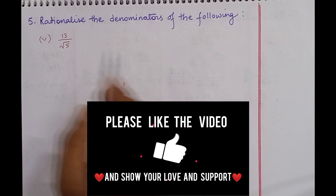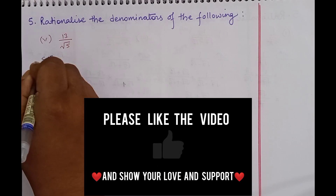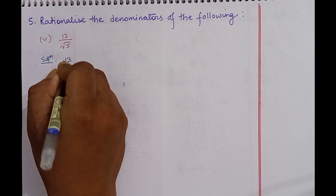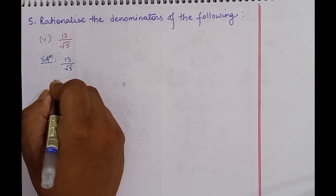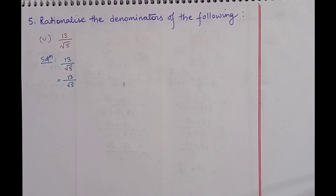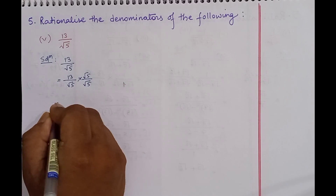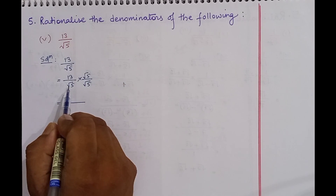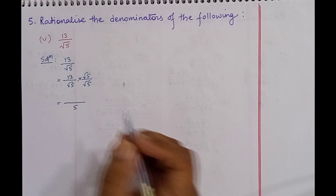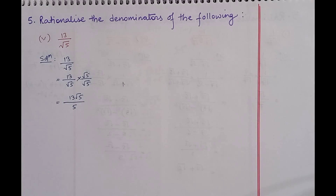Rationalize the denominators of the following: we have 13 by root over 5. So we'll multiply 13 by root over 5 into root over 5 by root over 5. On multiplying, the denominator becomes root over 5 into root over 5 which is 5, and 13 into root over 5 is 13 root over 5. So the answer is 13 root over 5 by 5.